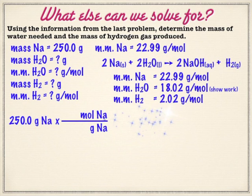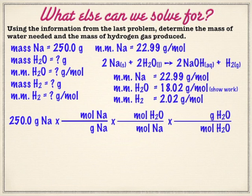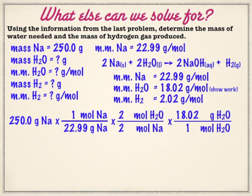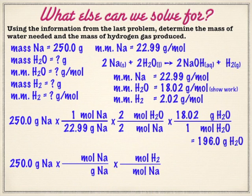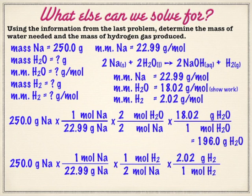We're going to go from grams to moles of sodium, and in this case go to moles of water — that's where it differentiates — and then to grams of water. This ends up being a one-to-one ratio in terms of moles, but this time it's only 18 grams per mole. So you're going to end up with about 18 over 22, which means this gets smaller — about 196.0 grams of water. For diatomic hydrogen, it's a one-to-two ratio from sodium, and the molar mass is about 2 grams. So we're taking 250 and dividing by almost 25, giving us a little over 10 — specifically 11 grams of diatomic hydrogen.